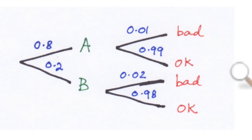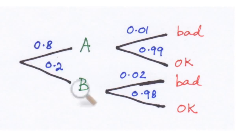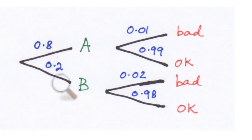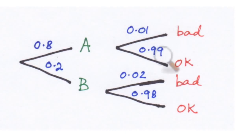If you start at any one of these nodes and look at all the branches that lead out from it, the probabilities must add up to 100%. So if you start at machine A and look at the two branches coming out, these must add up to 100% because this is all the output from machine A.